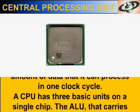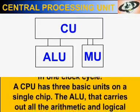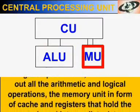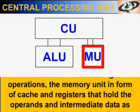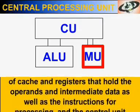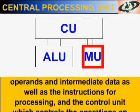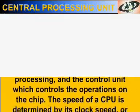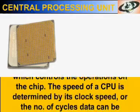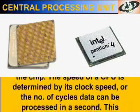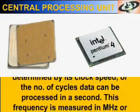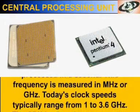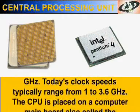A CPU has three basic units on a single chip: the ALU that carries out all the arithmetic and logical operations; the memory unit in form of cache and registers that hold the operands and intermediate data as well as the instructions for processing; and the control unit which controls the operations on the chip. The speed of a CPU is determined by its clock speed, or the number of cycles data can be processed in a second. This frequency is measured in megahertz or gigahertz. Today's clock speeds typically range from 1 to 3.6 gigahertz.